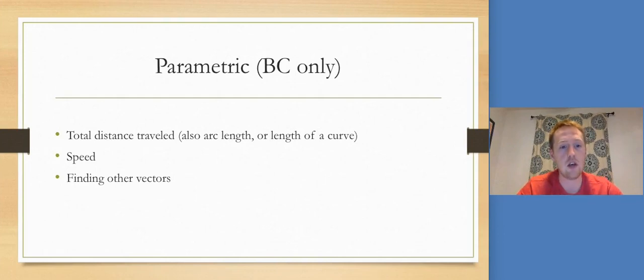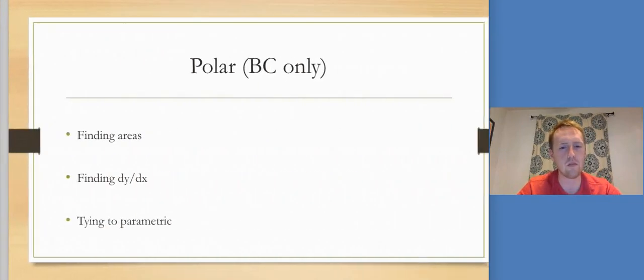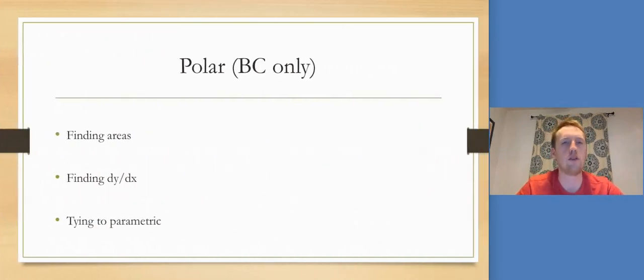We've also got parametric equations, so total distance traveled, arc length, speed, finding other vectors. Like say you've got the velocity vector, they want the acceleration vector, something like that. And then polar coordinates, which mostly is finding area. When it's strictly polar it's almost always just find the area, but sometimes you also have to find dy/dx.